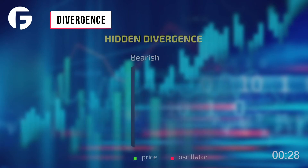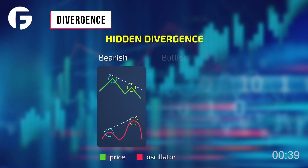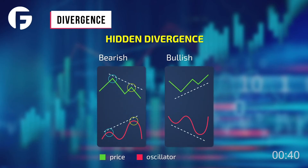Second, Hidden Divergence. Hidden Divergence is the opposite of explicit divergence and also has two variations. Hidden Bearish Divergence, where the price updates a lower maximum while the oscillator is up. Hidden Bullish Divergence, where the price continues to rise while the oscillator falls.